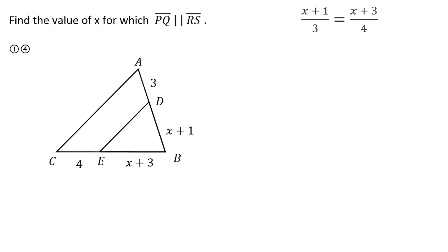Okay, again quick setup. X plus 1 compares to 3 the same way that x plus 3 compares to 4. Cross multiply, use the distributive property, isolate the variable. 4x take away 3x is 1x. Of course I'm not going to write the 1, I'll just write x. 9 take away 4 is 5.